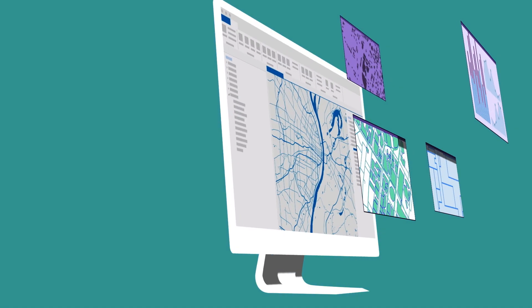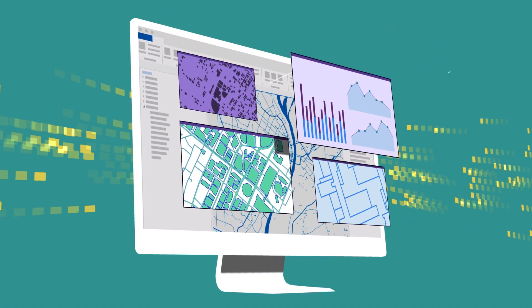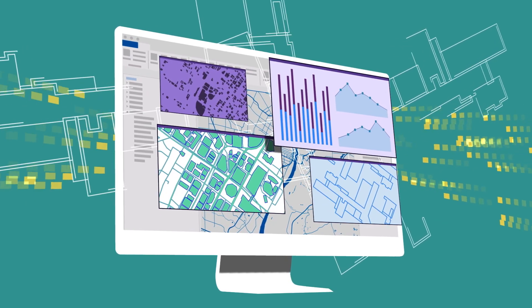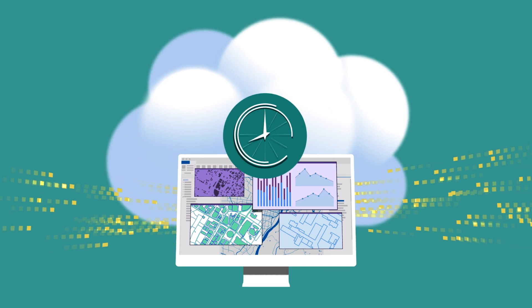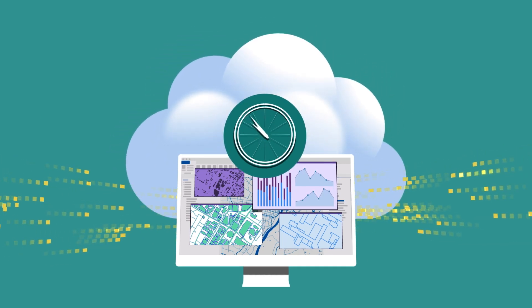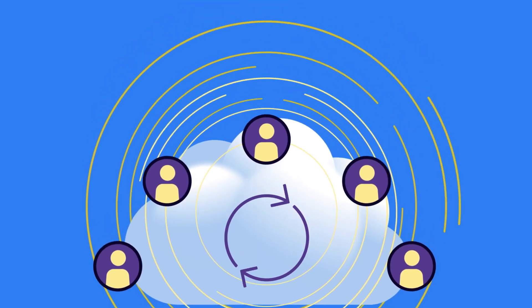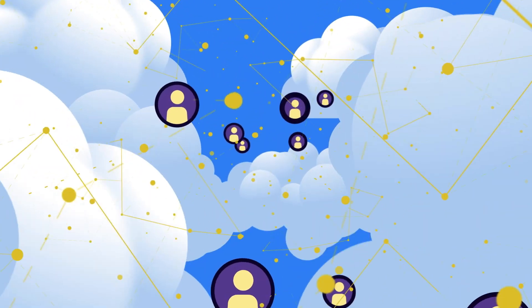You can also incorporate other data, like capital plans or as-builts, from paper or digital sources using a simple web app. This complete picture of your system supports up-to-the-minute accuracy that can be accessed by anyone on your team, helping you level up efficiency and keep your team agile as unexpected events arise.